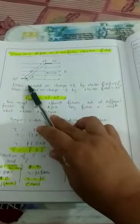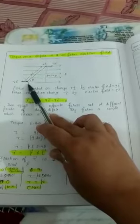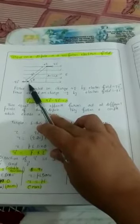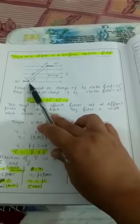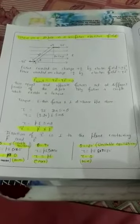These two forces are equal and opposite, but they act at different points. Because they act at different points, they will not cancel out. They form a system known as a couple. The function of this couple is to rotate the dipole in the uniform electric field, and due to this rotation, torque is produced.